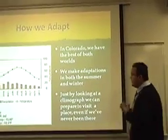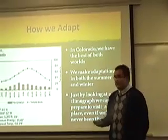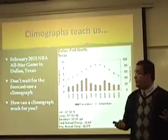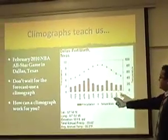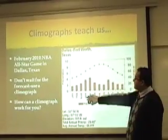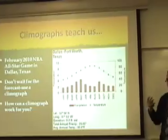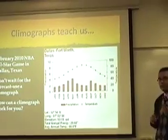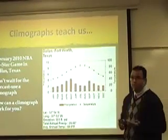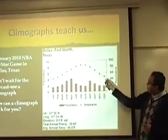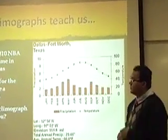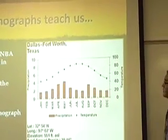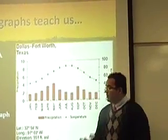So just by looking at a climograph, we can get an idea of what it's like in a place before we ever even visit there. Let's say that next year in February, I want to go to the NBA All-Star game. It's currently being held in Dallas, and since I've never been to Dallas, I can just look at a climograph and get an idea of how to prepare. In February, we can see there's not a whole lot of precipitation, so we might need to bring an umbrella or a jacket. The temperatures are also pretty cold — only about 40 degrees on average — so it'd be safe to bring a jacket and not our flip-flops and suntan lotion. You can use a climograph to forecast the weather without waiting for the weather channel or the news.